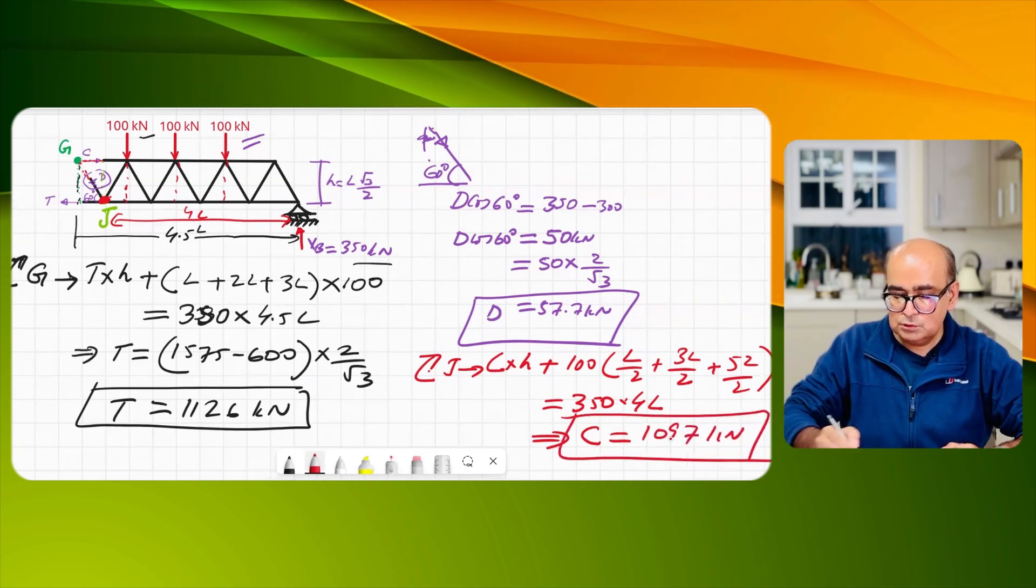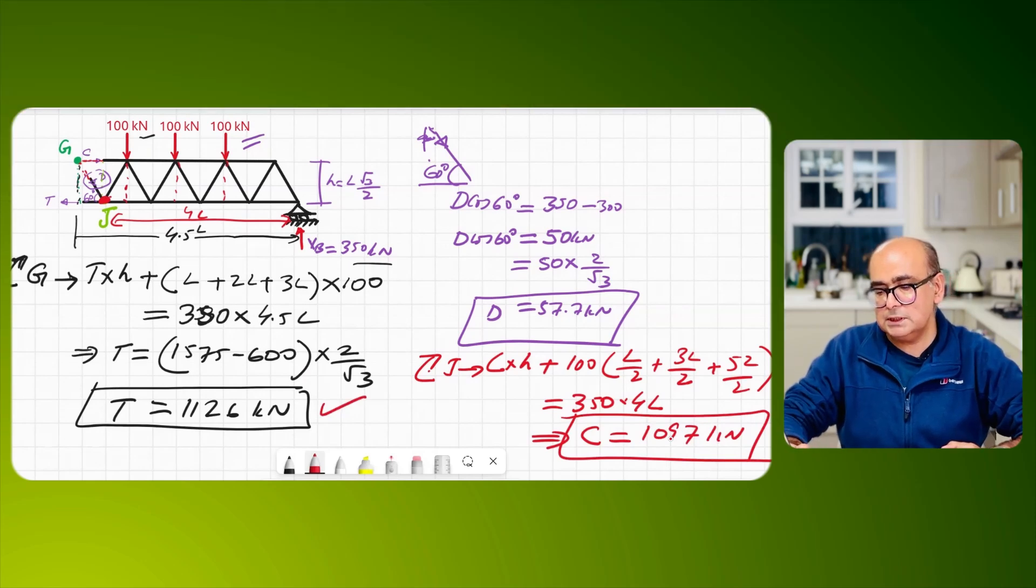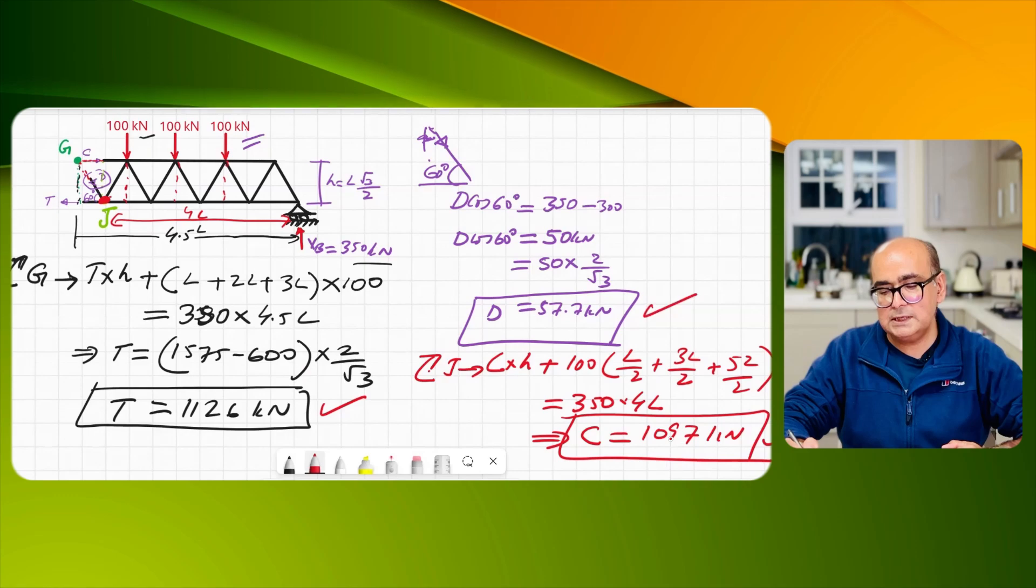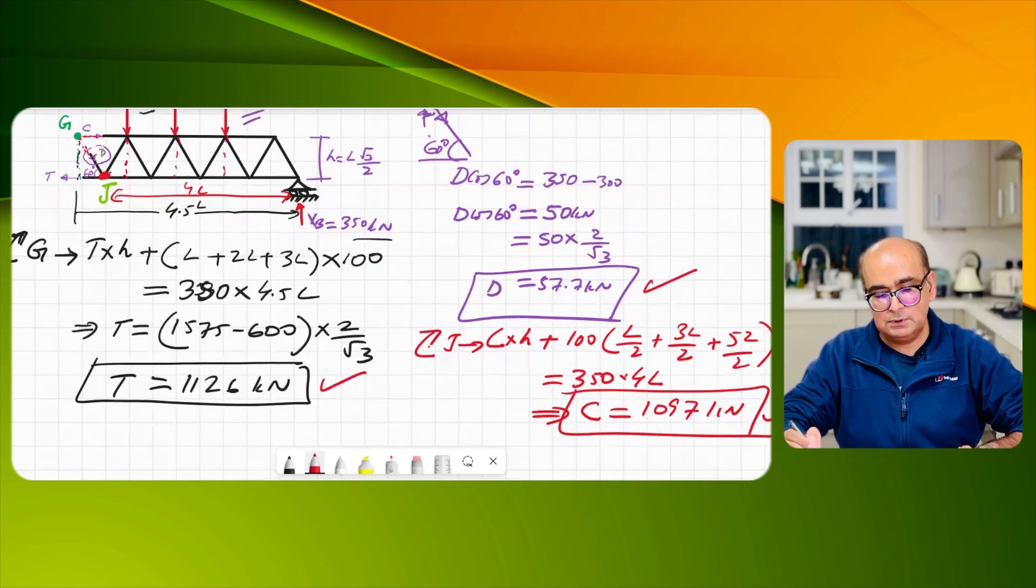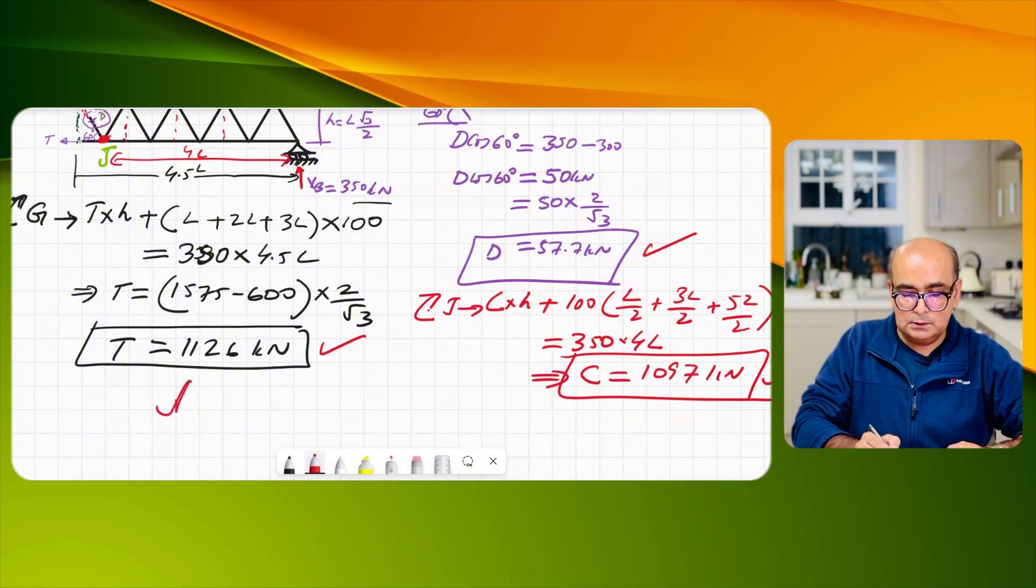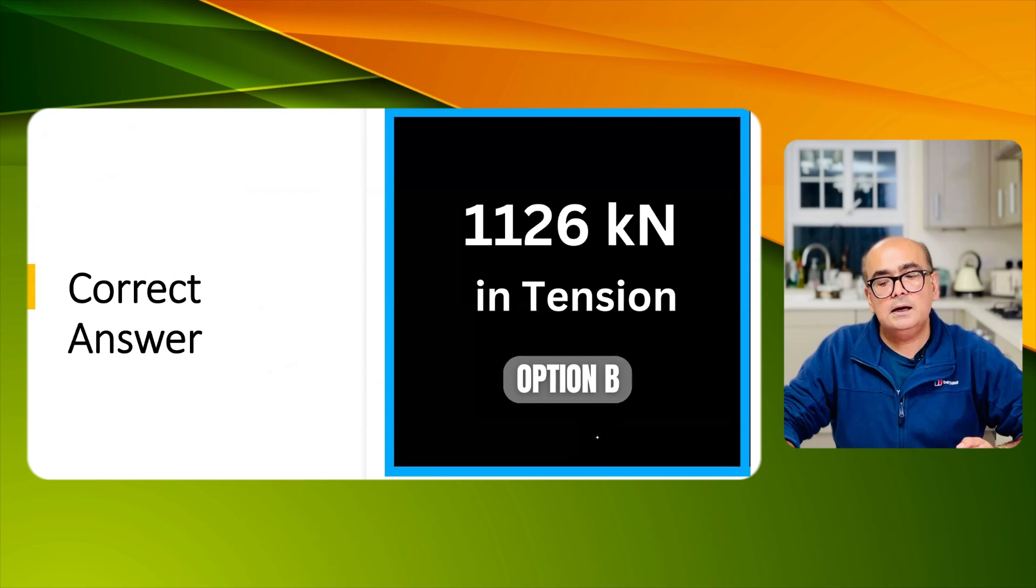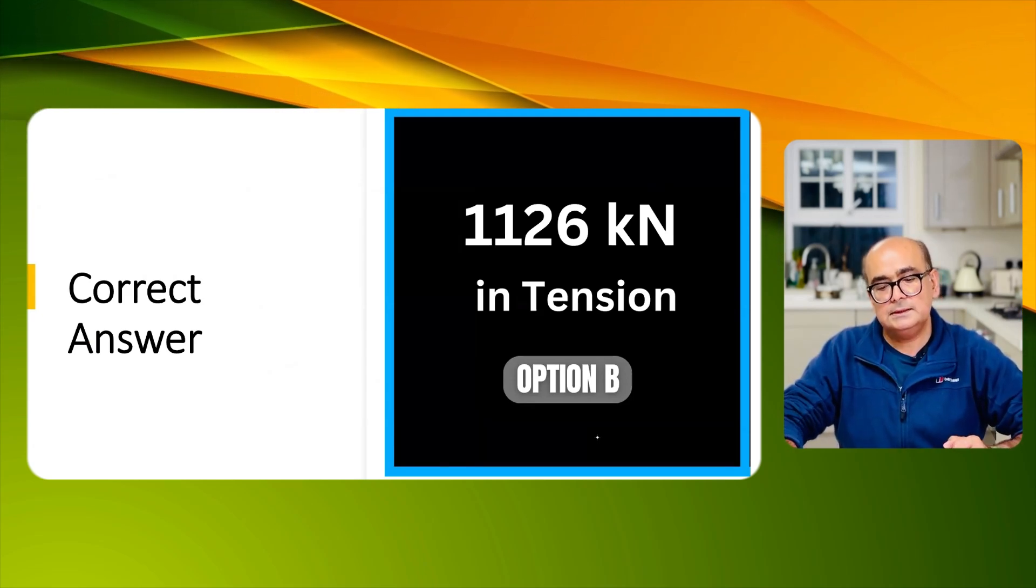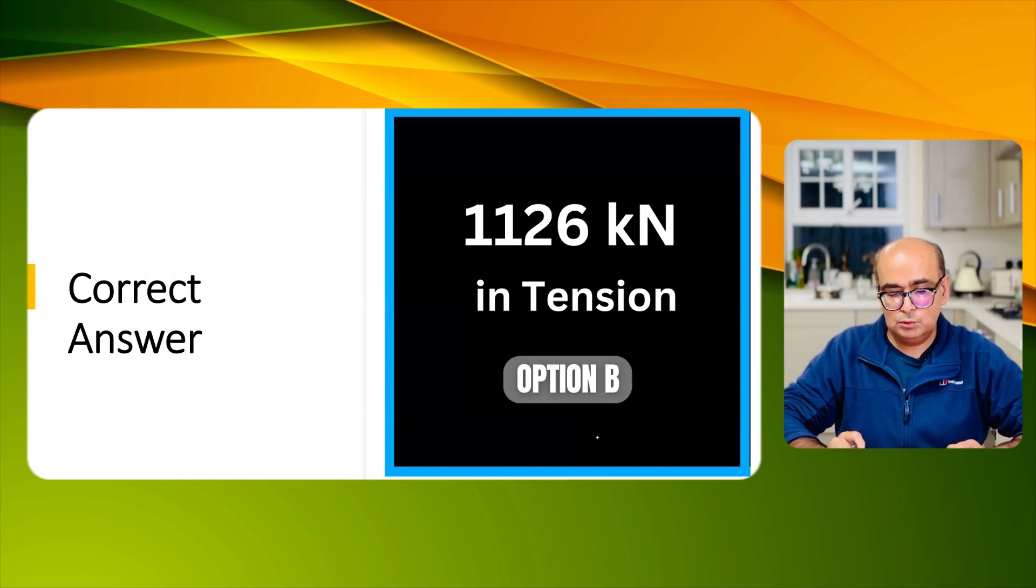So you have tension 1126, you have compression 1097, and you have force in diagonal which is 57.7, so our final answer is 1126 kN. So our final answer is 1126 in tension and this is our maximum load.